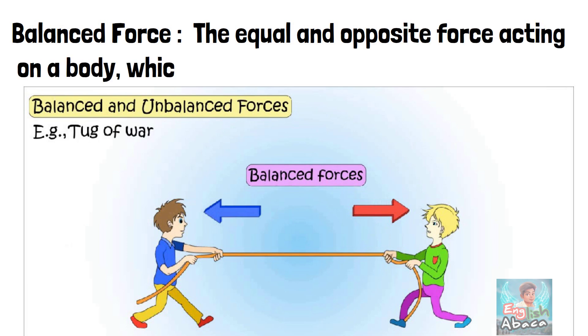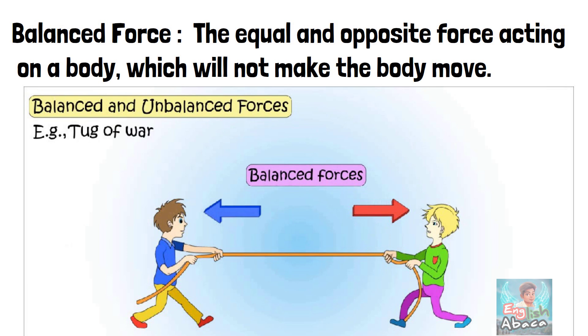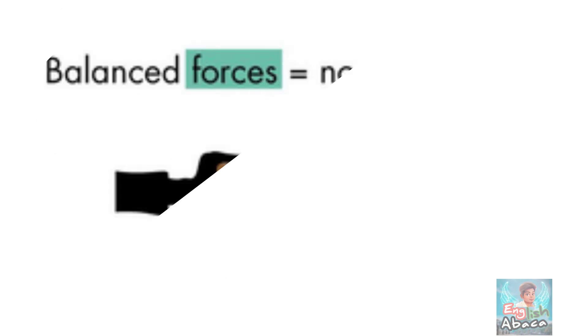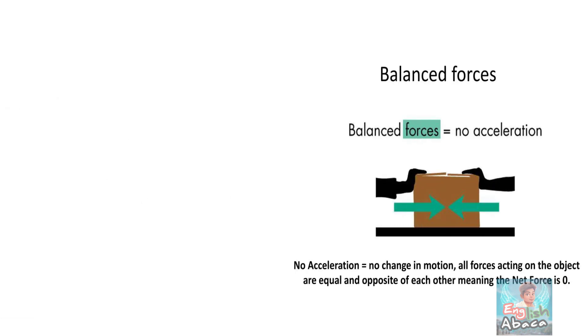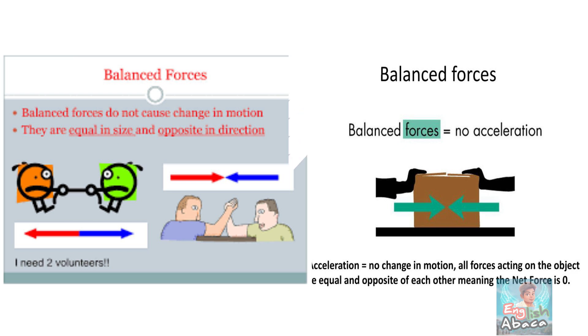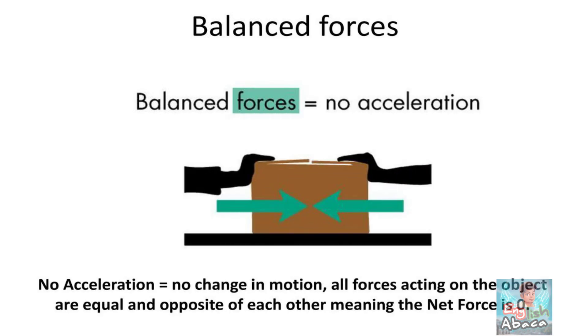Balanced force: the equal and opposite forces acting on a body which will not make the body move. Let's look at the example from the textbook. There is a box on a table. If we apply force from the left-hand side and right-hand side equally, the net force will be zero and the velocity is cancelled. So the box does not move. This is the balanced force.